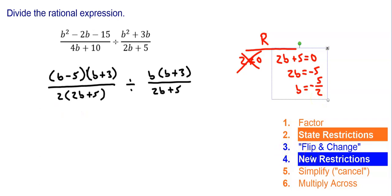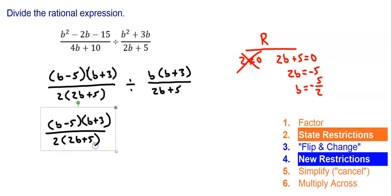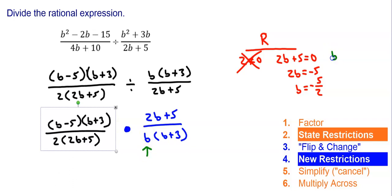Here are the two new steps: keep the first expression the same — b minus 5 times b plus 3, all over 2 times quantity 2b plus 5 — then change it to multiply and flip the second expression, so now it's 2b plus 5 divided by b times b plus 3. Now I find any new restrictions from the new denominator. I have b equals zero, and b plus 3 equals zero, so b equals negative 3. My restrictions are negative five-halves, 0, and negative 3.